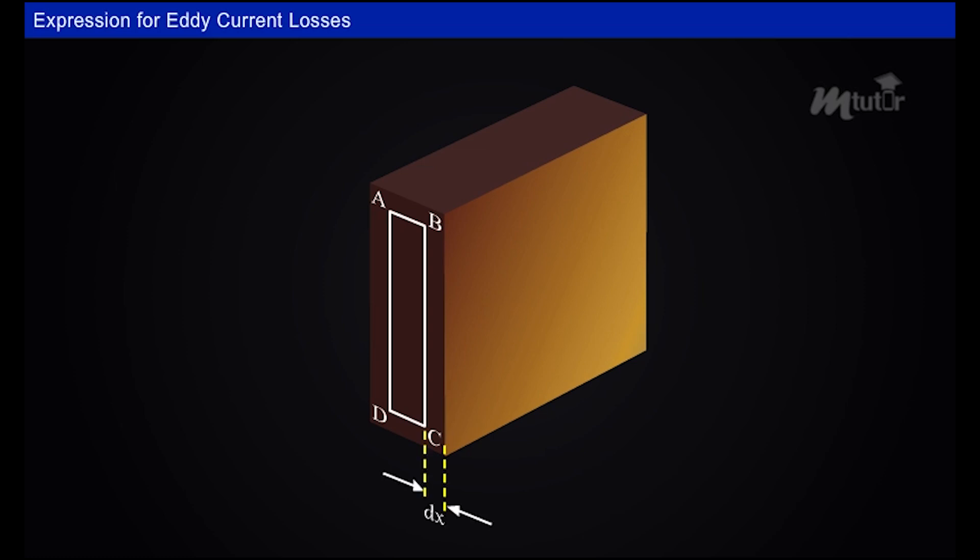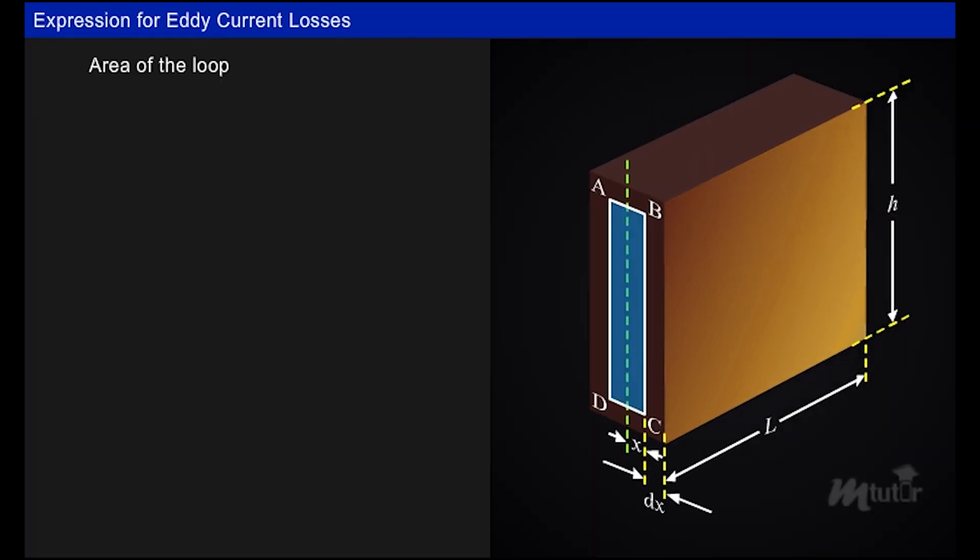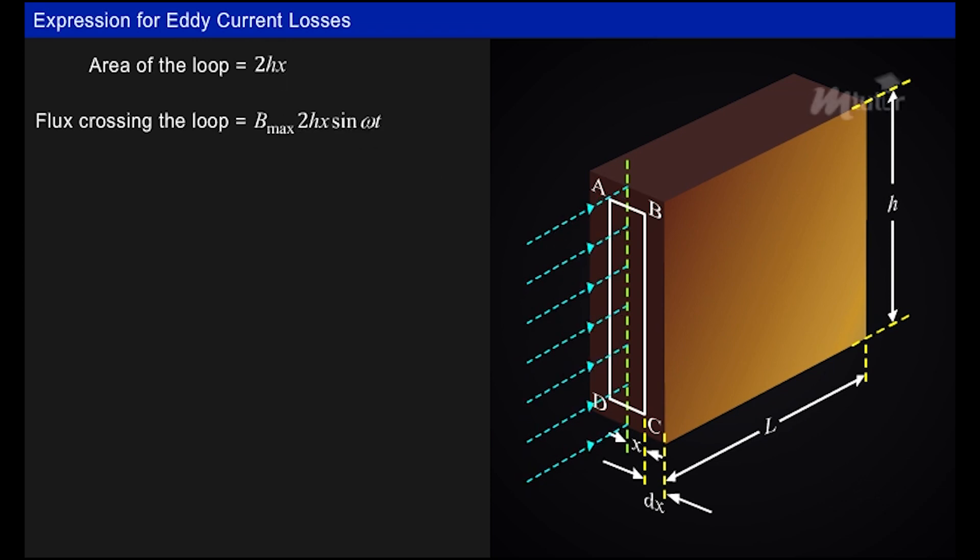Let height of the core be h and length be l. Area of the loop ABCD is equal to 2hx. Flux crossing the loop is equal to B_max × 2hx × sin(ωt). The loop may be considered to be a single coil through which time-varying flux crosses, so there will be induced voltage in it.